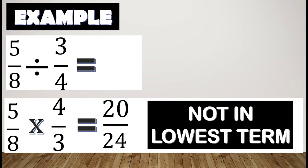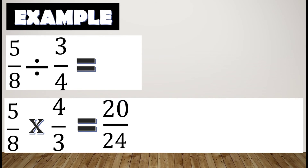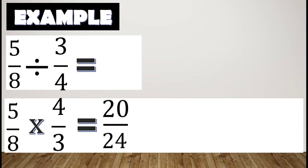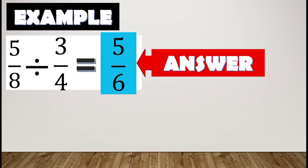Twenty over twenty-four is not written in lowest term, so we need to simplify by finding the greatest common factor. Twenty and twenty-four are both divisible by four. Twenty divided by four is five, and twenty-four divided by four is six. The simplified form is five over six, or five-sixths. Therefore, the solution for our second example is five-sixths.